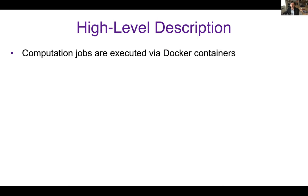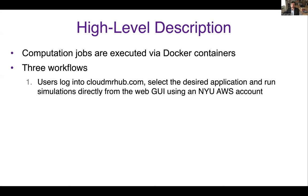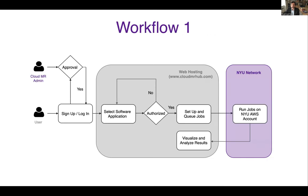Based on those specifications, we decided that all computation jobs would be executed via Docker containers. We contemplated three possible workflows for CloudMR. In the first workflow, users log into a portal, cloudmrapp.com, select the desired application, and run simulations directly from the web browser using our NYU Amazon AWS account. A user can sign up, log in, and activate one or more applications. They set up and run computation directly from the web browser without installing anything. The jobs run in the cloud inside the NYU AWS control tower, and costs are charged to the project accounts. Once the job is completed, the user can display and analyze the results from the web browser.